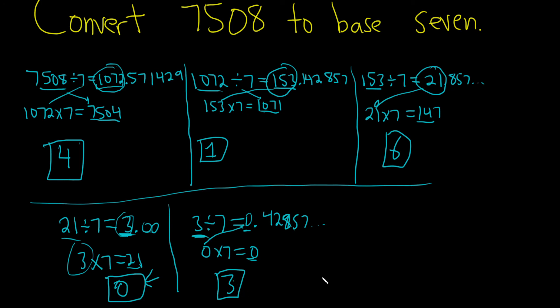Now we can write all these numbers down backwards, and that'll be the answer. So 30614 in base 7 is equal to 7508 in base 10. I hope this video has been helpful.